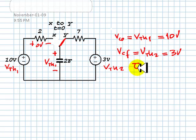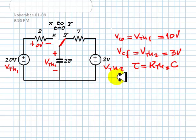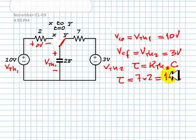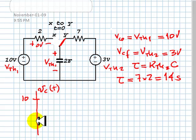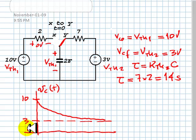The time constant is RTH2 times C. In this case, the time constant is 7 times 2 — 14 seconds. The voltage in the capacitor can now be plotted. It starts at 10 volts, and its final value will be 3 volts, decaying according to an exponential. The time constant is 14 seconds.